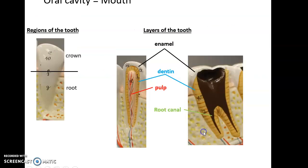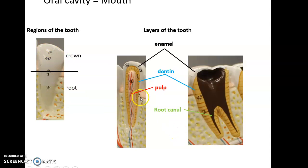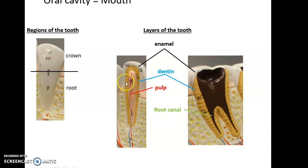The top part of the tooth that you can see is called the crown; the bottom part going into the mandible or maxilla bones is the root. Looking at the tooth in layers: the core is the pulp, which is the living part containing blood vessels and nerves. The pulp goes through the root canal, which opens at the inferior end of the tooth. Surrounding the pulp is a thick layer called the dentin, and the most superficial layer is the enamel — the white part of the tooth and the hardest substance produced by our body.